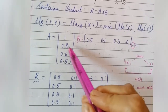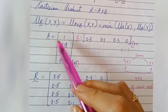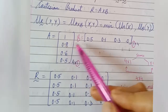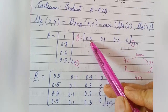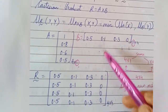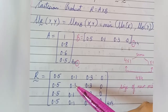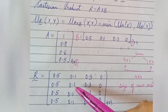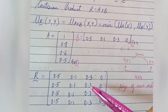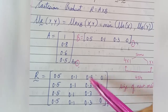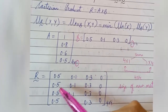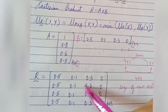For the second row, select the second element from set A. 0.8 and 0.5 → minimum is 0.5; 0.8 and 0.1 → minimum is 0.1; 0.8 and 0.3 → minimum is 0.3; 0.8 and 0 → minimum is 0. This is the second row.